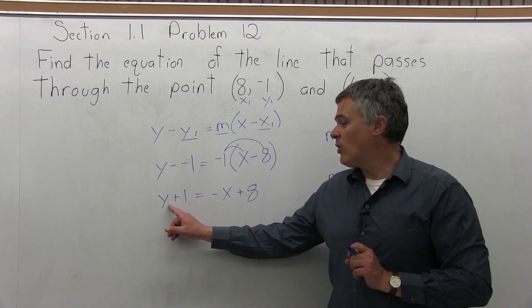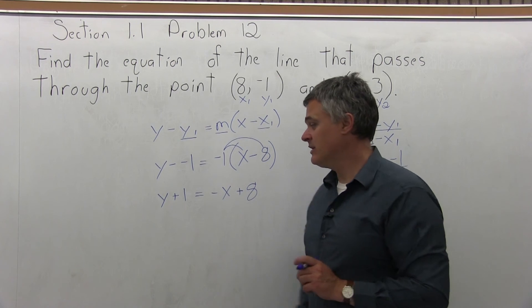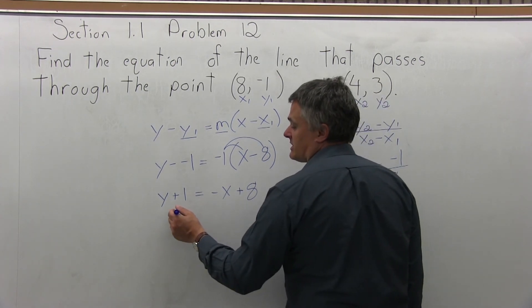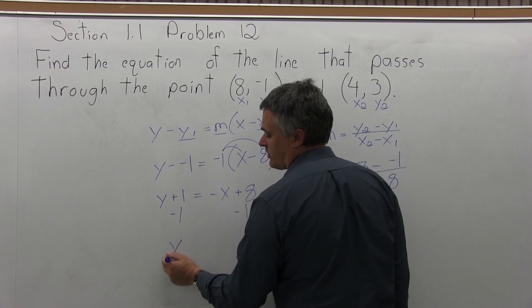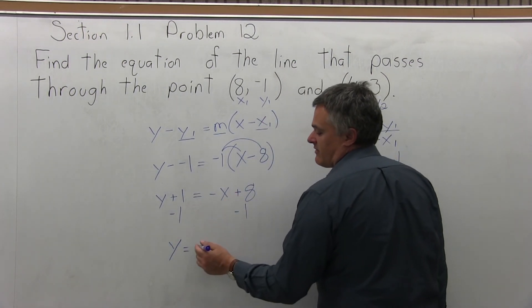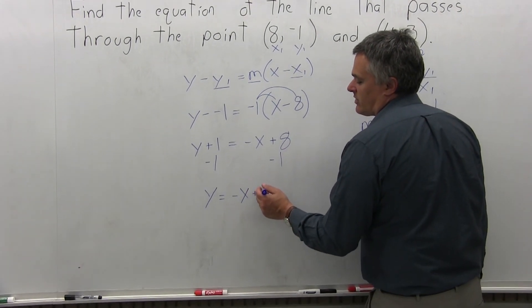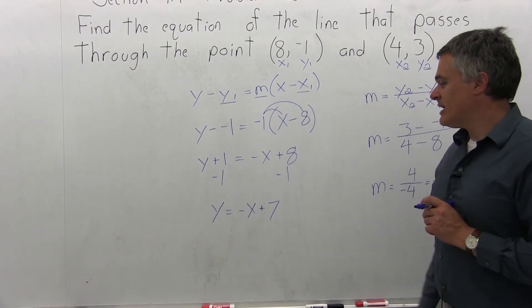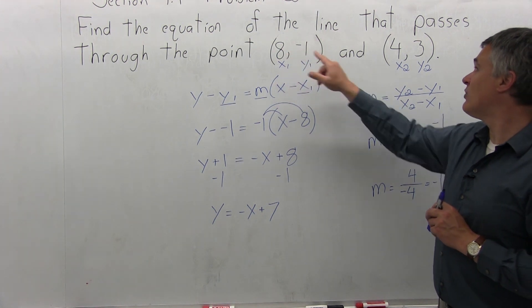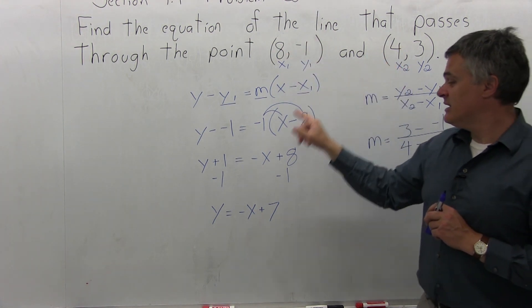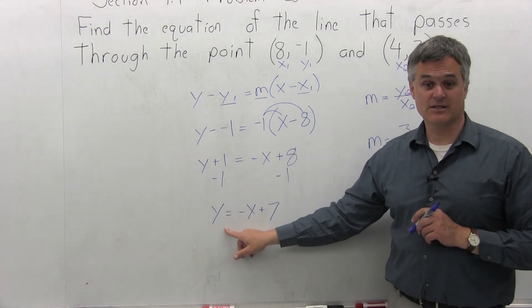Now to finish this to the end, I want y by itself on the left, and I have y plus 1. I need to get rid of the plus 1. So on both sides of the equals, I will do minus 1. On the left it will cancel, leaving me with just y, which is what I want. And on the right, this negative x will stay the way it is. And positive 8 and negative 1 will combine to make positive 7. And now that's the final answer. So the equation of the line that goes through the point (8, -1) and (4, 3) is y equals negative x plus 7, and that's in its most simple form.